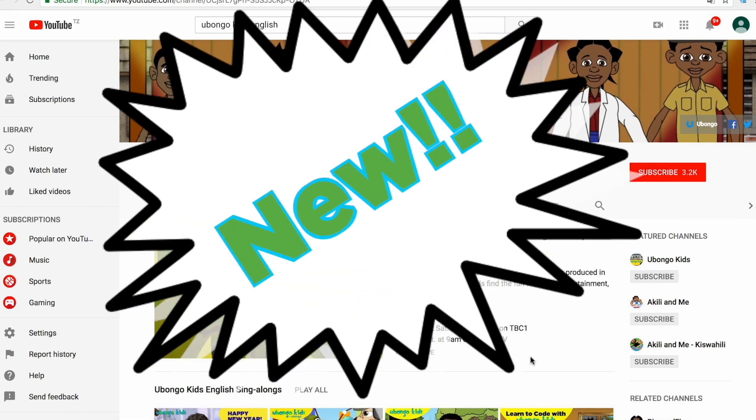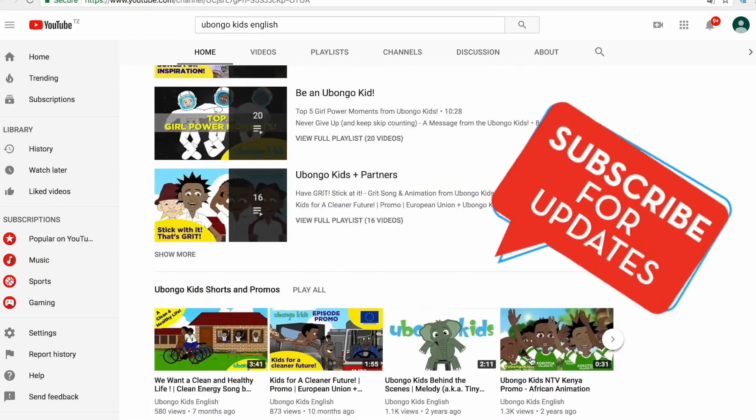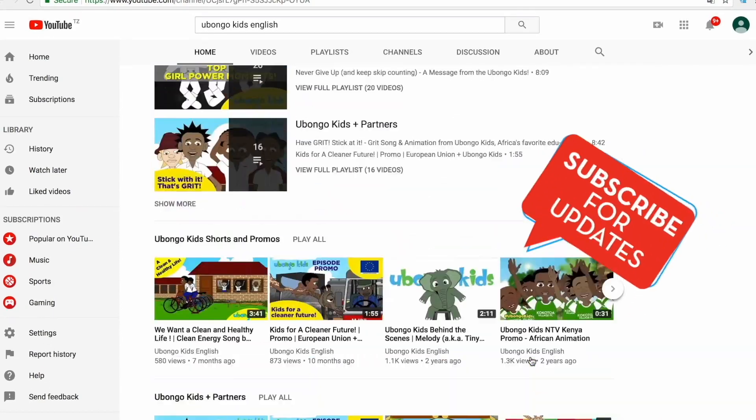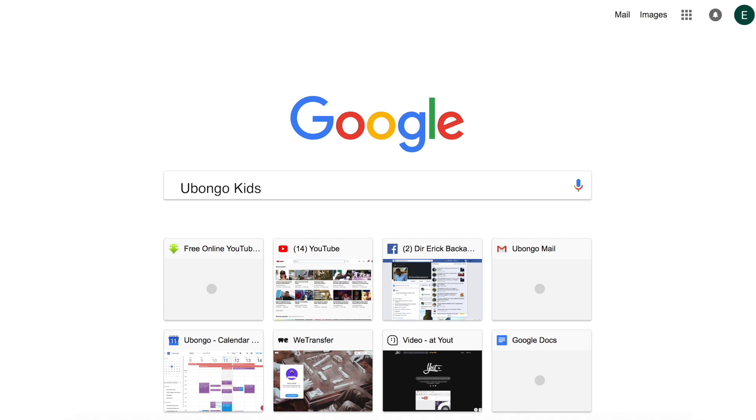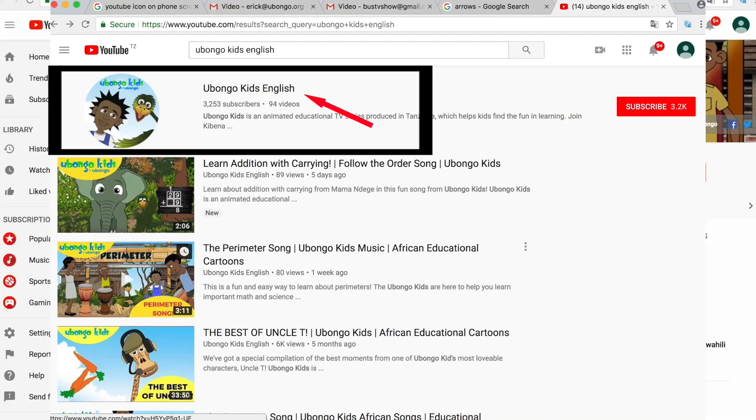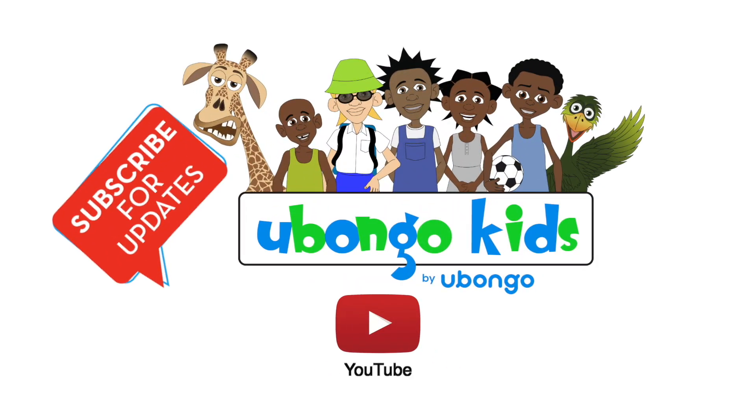Never miss out on new Ubongo Kids videos ever again. Subscribe today and become the first to know every time new, fun, educational content is available. Simply type Ubongo Kids English on the search bar. Click on the Ubongo Kids English channel page. Click subscribe on the right-hand corner of your screen. What are you waiting for? You are three easy steps away from joining the Ubongo Kids family.